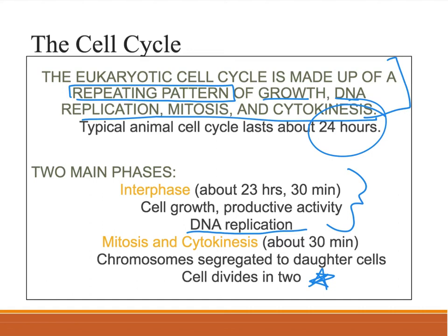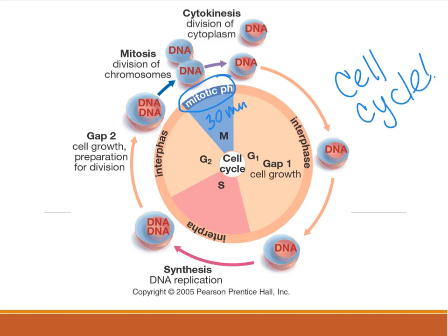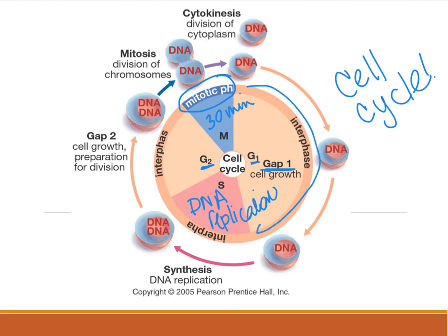In mitosis you get an exact copy of the cell, whereas fertilization produces a brand new cell. Here's a picture of the cell cycle. Mitosis takes about 30 minutes. Then you have G phases for growth — two growth phases. DNA replication happens during interphase. So you have: growing, growing, growing — interphase first part; growing — DNA replicates, still interphase; more growth; then division. That's basically it.